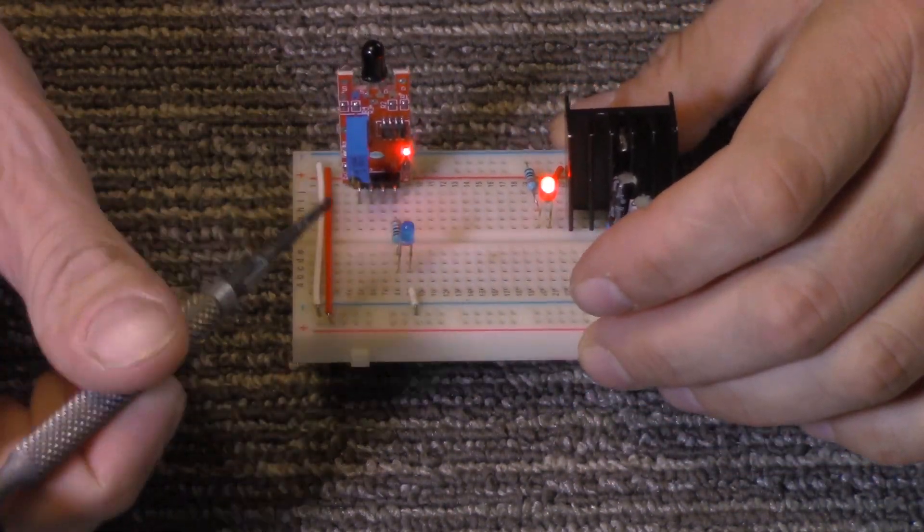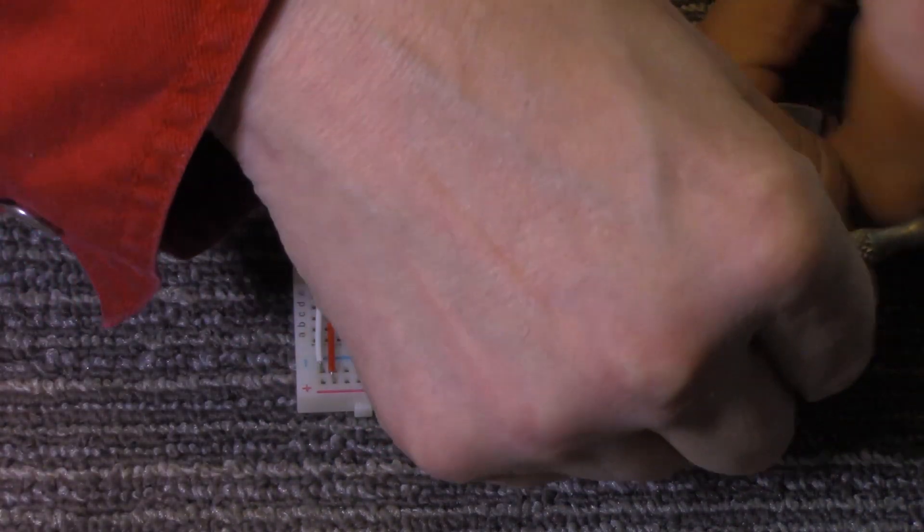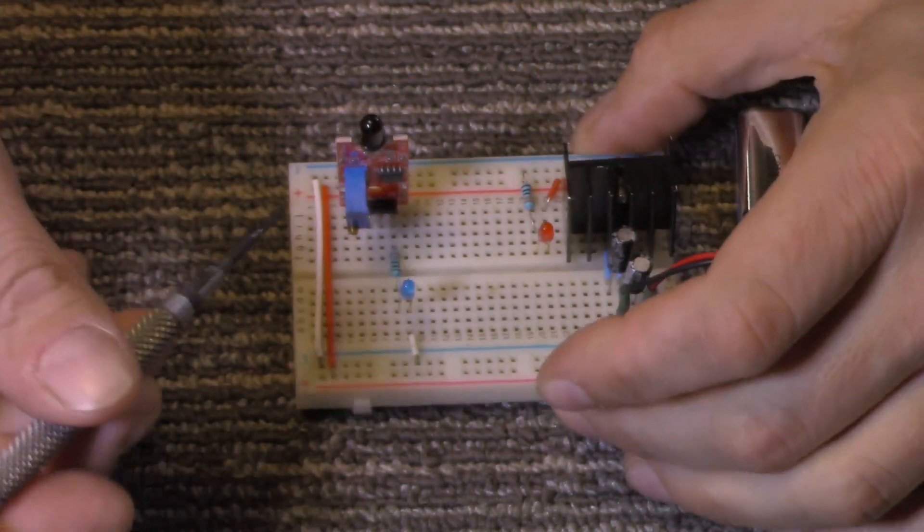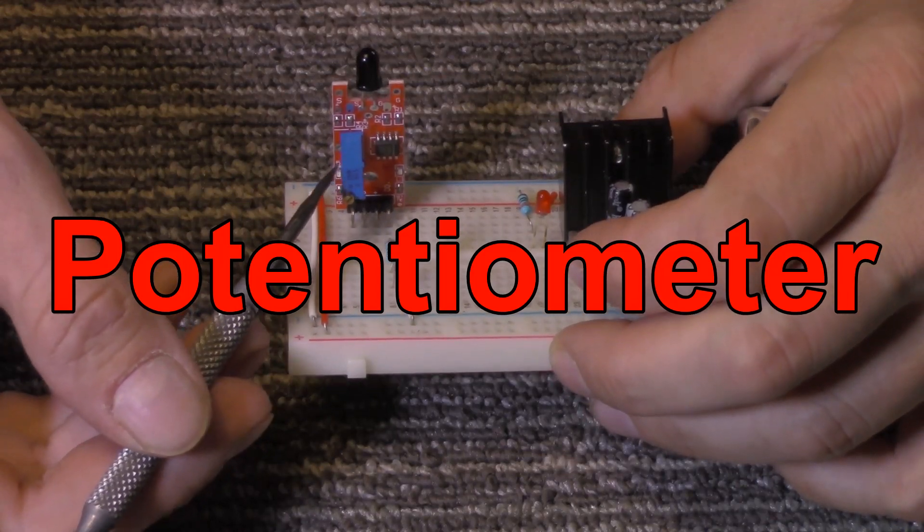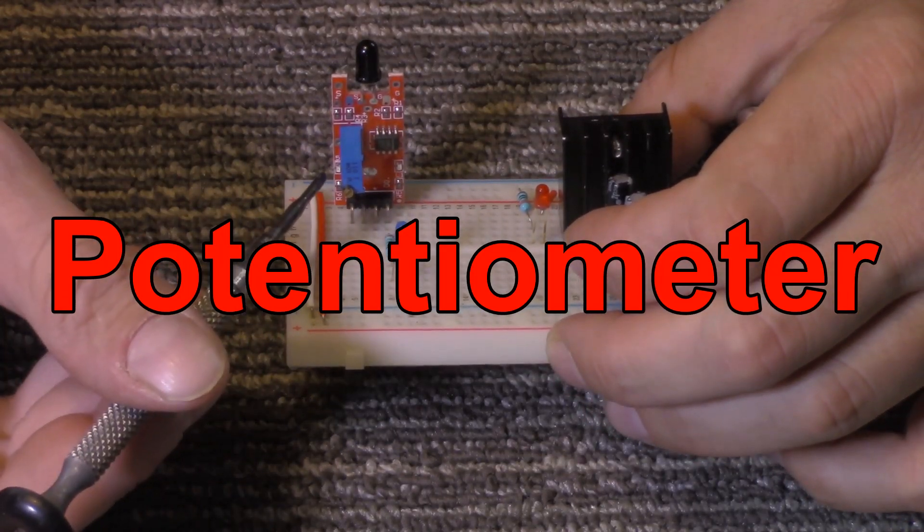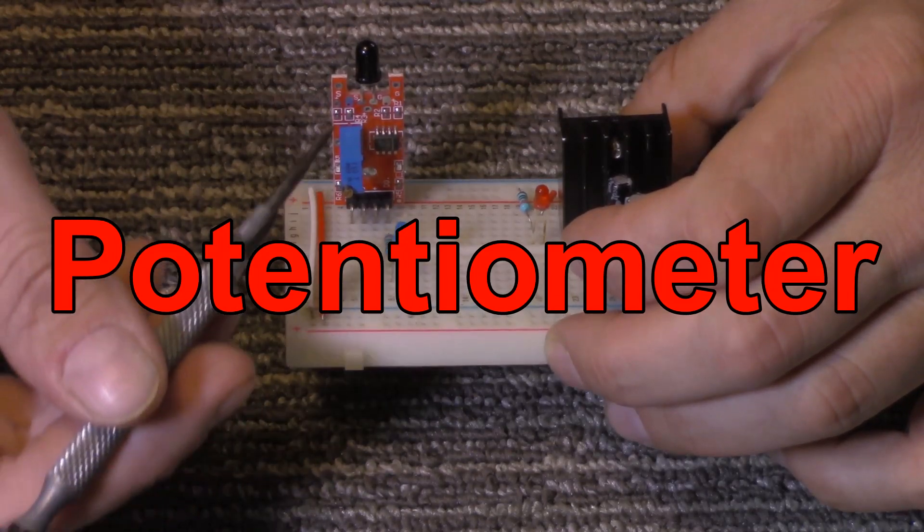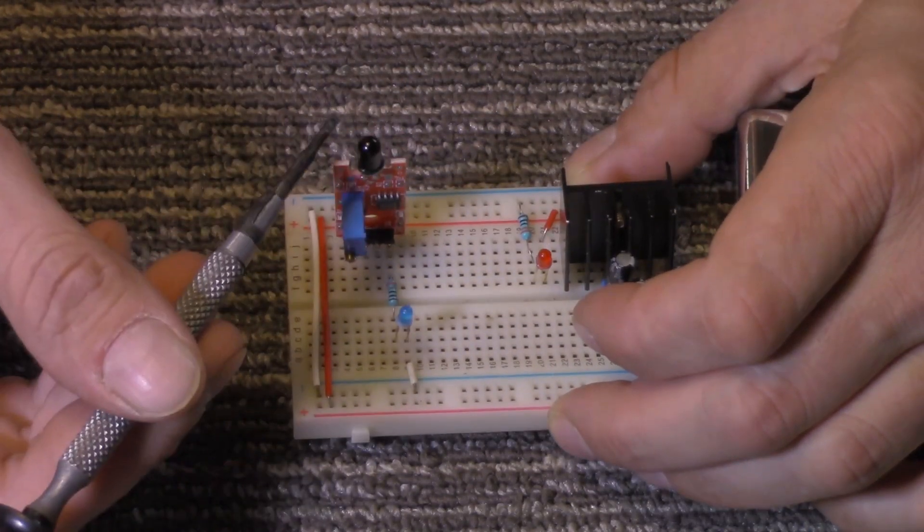Now, this does have a sensitivity selection right here. I'm going to go ahead and turn the power off. What this is, it's a multi-turn resistor, and we use this, if you turn it counterclockwise, it gets less sensitive.